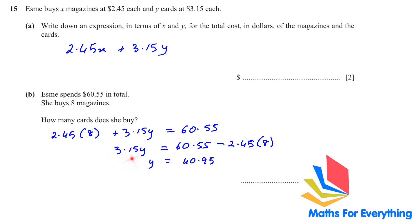We have 3.15Y, so 3.15 when we bring it to the other side it will be a divide. 40.95 divided by 3.15 will give you 13. So the total number of cards she buys is 13.